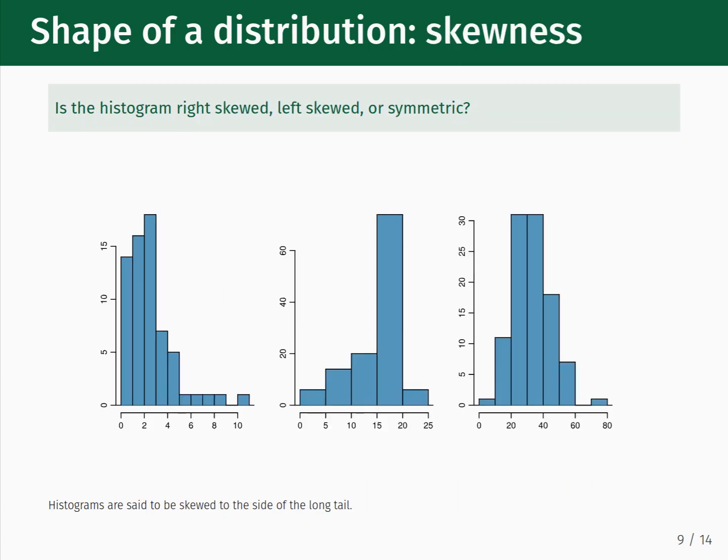These examples illustrate the meaning of the word skewness. Skewness refers to whether or not a histogram is shifted to one side. Starting from the left, we see an example of a right-skewed distribution, then a left-skewed distribution, and finally a symmetric distribution. If the distinction between right and left skewness seems backwards to you, remember that histograms are said to be skewed to the side of the long tail of the distribution.